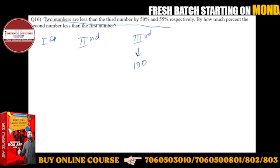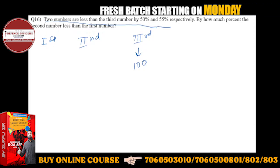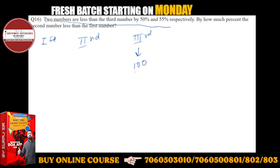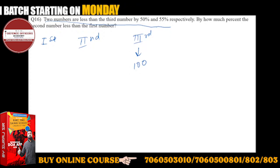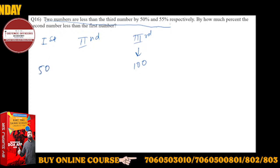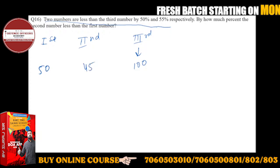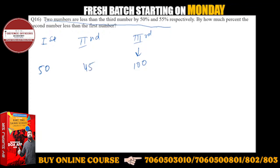So two numbers are less than the third number by 50%. So the first number is 50% less, which means 50% of 100 is 50. And 55% less means 45%.